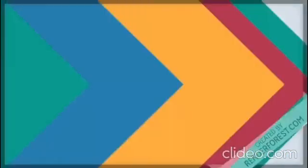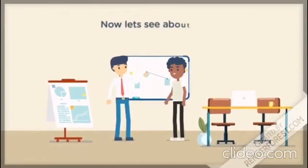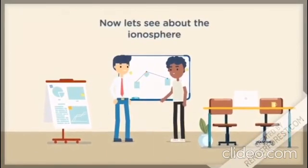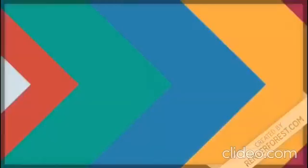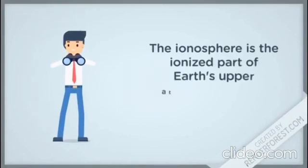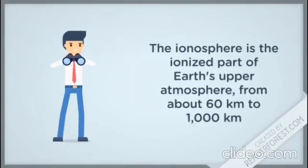Now let's see about the ionosphere. The ionosphere is the ionized part of Earth's upper atmosphere from about 60 kilometers to 1,000 kilometers.